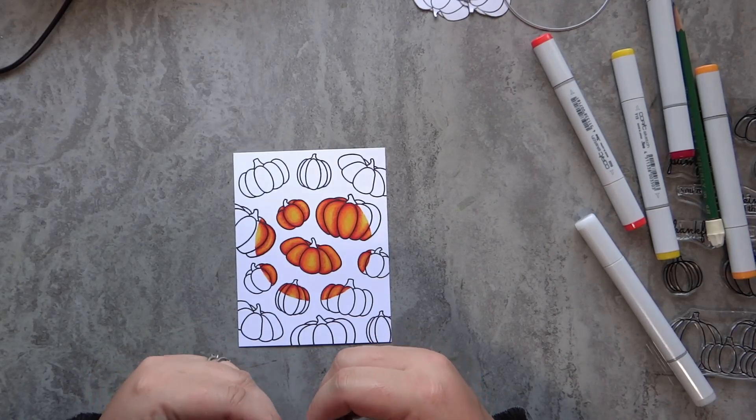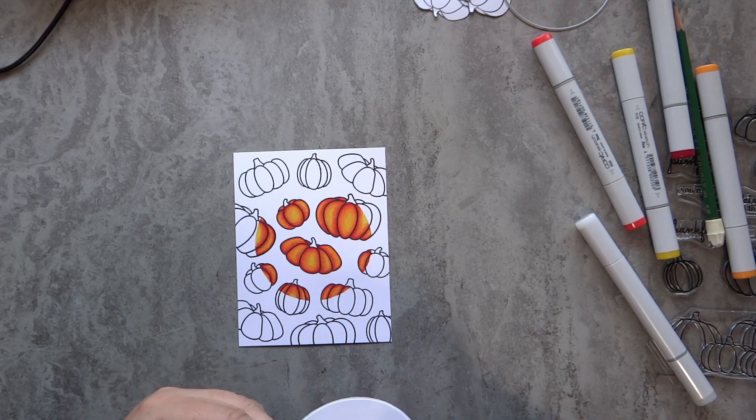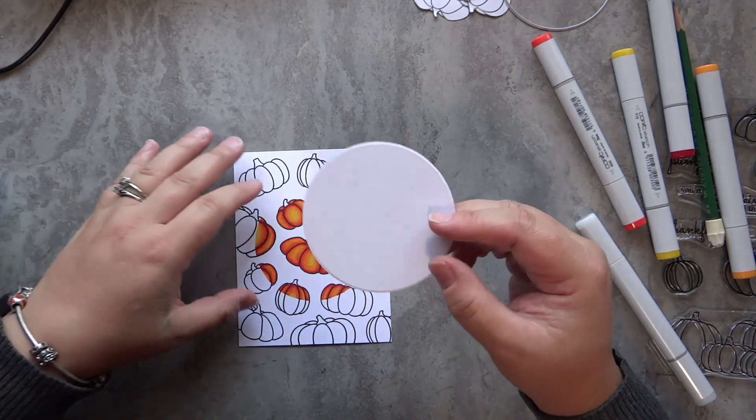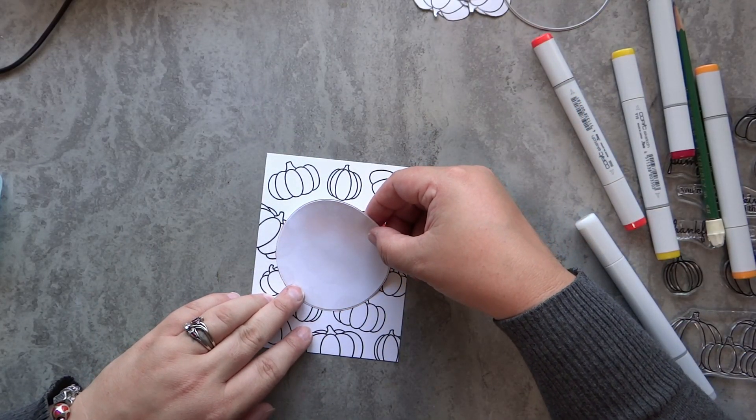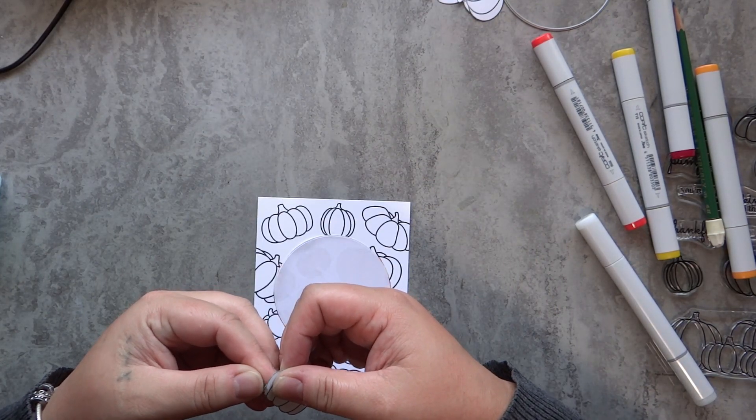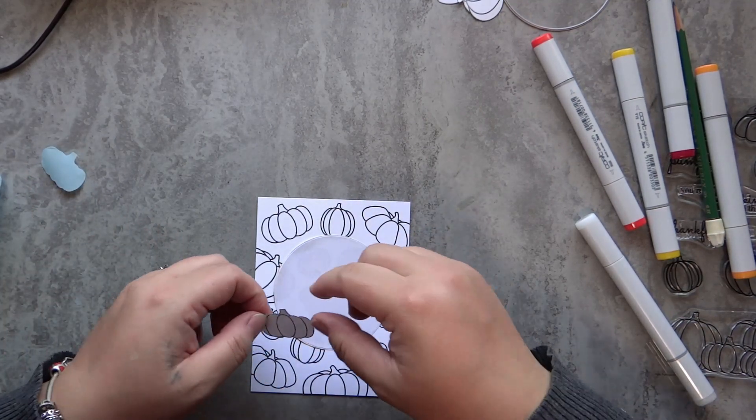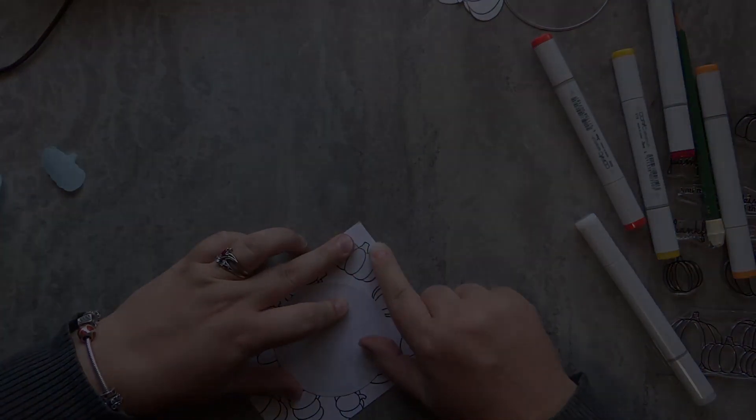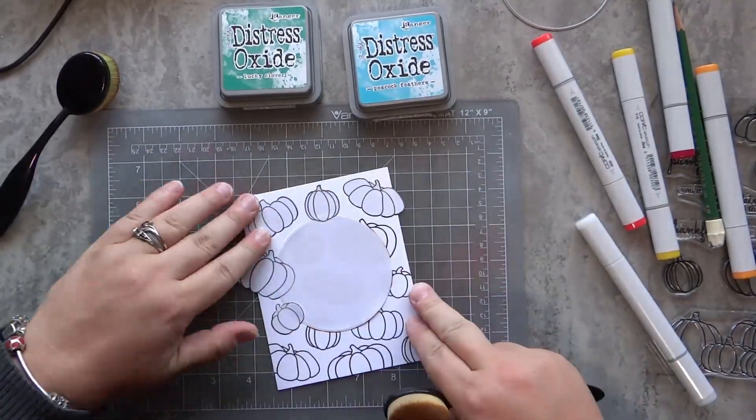One of my favorite colors to use with orange and red is teal. I love those colors together. I'll be using two Distress Oxide inks to fill in the color in the background, so outside of the circle. First, I need to place my circle mask, taking the backing off this time and laying it over my colored pumpkins. This will protect my spotlight of coloring. Now I can take all those single pumpkin masks and start placing them over the background stamping. I want to keep those white for now.